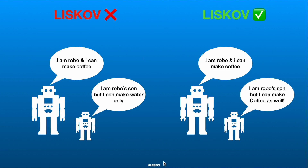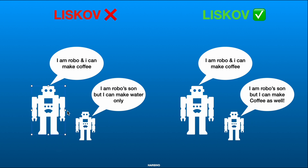Let's take a real-world example. Say you buy a robo that makes your coffee every day. There is some problem with this robo and it cannot work, but the robo comes with a mini robo as well — think of this as the robo's son. But the mini robo says: 'I can only make water.' Even though it is the robo's son, it cannot make coffee. The owner purchased the main robo to make coffee, but when that robo is not working, its son cannot make coffee — it can only make water. So this breaks Liskov's Principle.